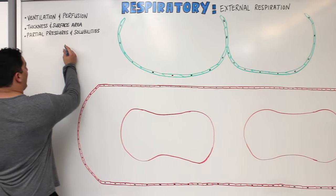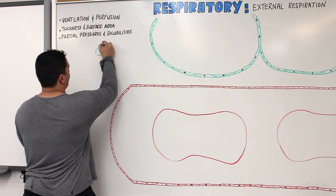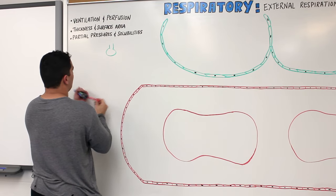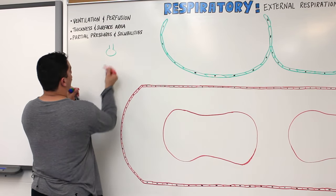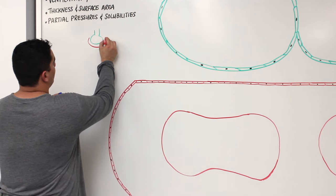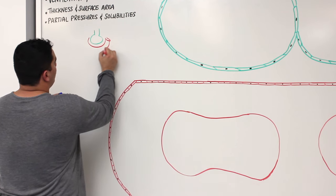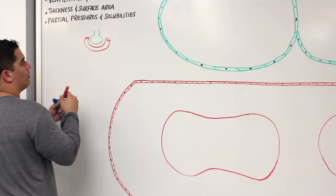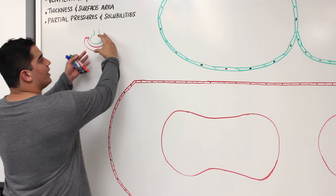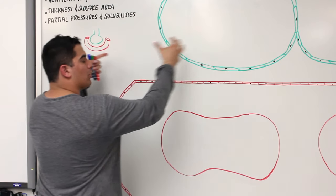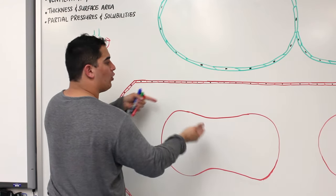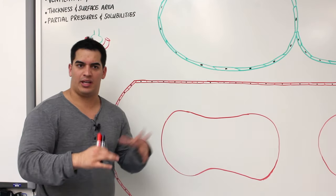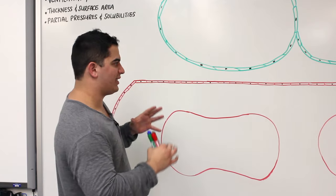What I'm doing here is imagining a piece of the lung — we had that diagram with the alveoli and the pulmonary capillaries serving them. I'm just expanding on that, blowing up the alveoli and the pulmonary capillaries so we can make everything really nice and clear.